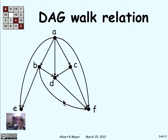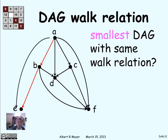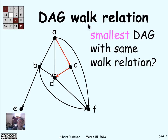Here's a simple DAG — you can check there are no cycles in it. The smallest DAG with the same relation can be found by going through edges one at a time and asking whether each can be removed because it's not contributing anything. For example, there's a path from A to E that goes through B, so the direct edge from A to E isn't contributing to connectedness and can be removed. We can still walk from A to E through B. Similarly, there's a walk from A to D through C, so there's no need for a direct edge from A to D.